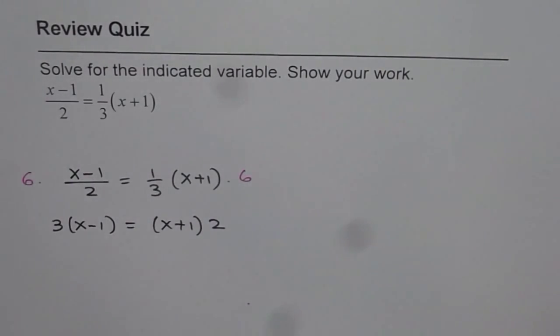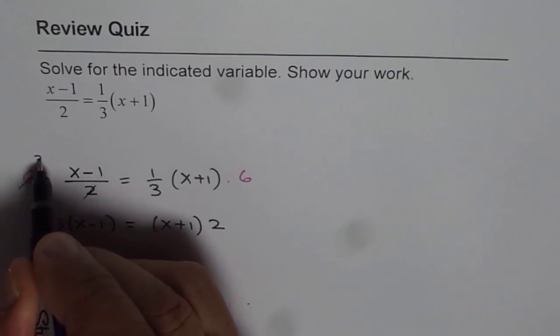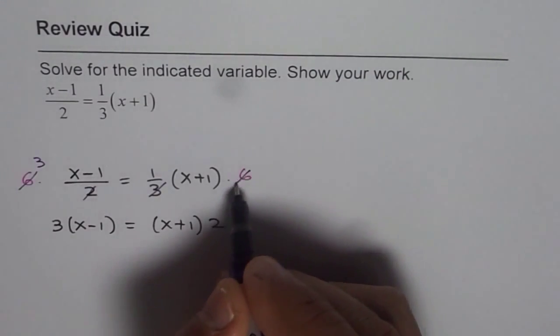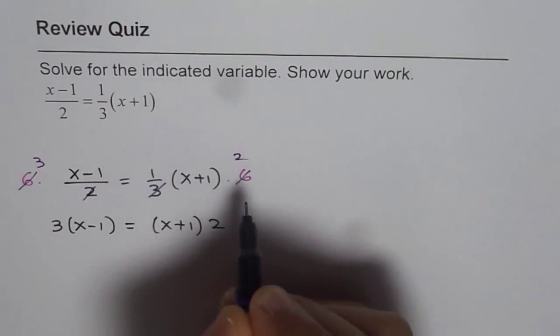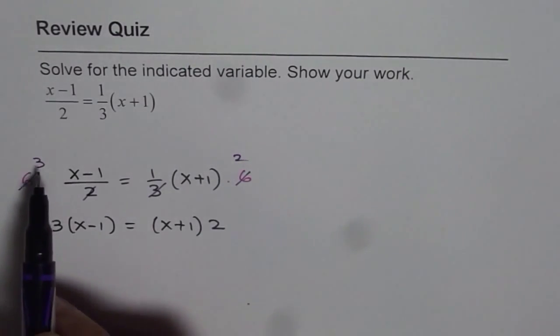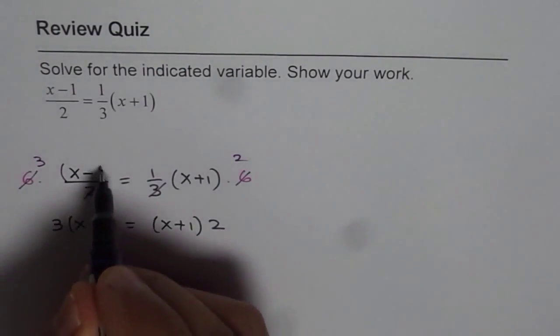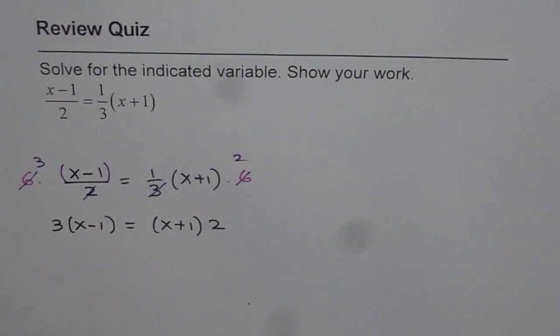This is because 2 goes 3 times with 6 and 3 divides 6 by 2. So we get 2 times x plus 1 on the right side and 3 times both these terms x minus 1 on the left side.